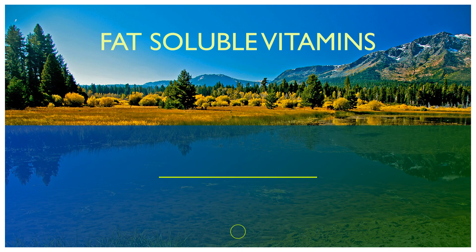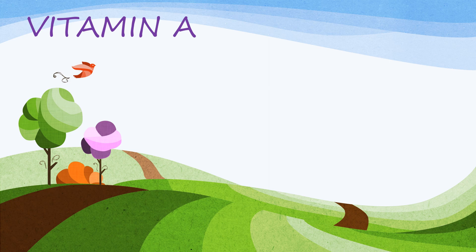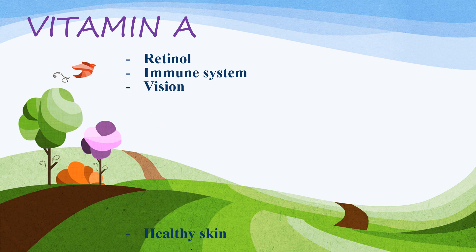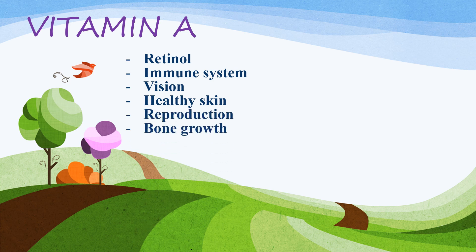Fat-soluble vitamins are A, D, E, and K. Vitamin A, also known as retinol, has several important functions. It plays an important role in combating infection and is also called an anti-infective vitamin. This includes helping our body's natural defense — the immune system — against illness and infection effectively. It helps with vision through the synthesis of the visual pigment rhodopsin, maintains healthy skin, is required for the formation of mucus-secreting epithelium, supports reproduction, and controls bone growth through osteoblastic and osteoclastic activity.